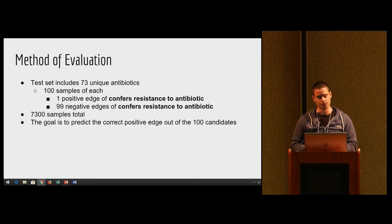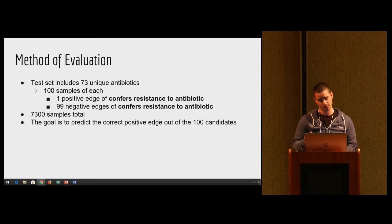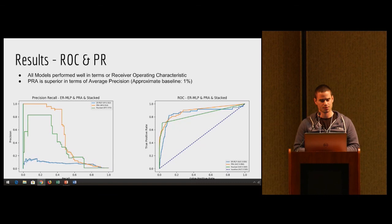The method of evaluation: how do we actually evaluate this model to make sure it's doing what we want it to do? We created a test set that included 73 unique antibiotics. Each antibiotic had 100 samples. We had one positive edge of confers resistance to the antibiotic for that specific antibiotic, and then we had 99 known negatives that we sampled from our known negative list. This produced 7,300 samples in total. The goal was to predict that correct positive edge out of the total 100 candidates for each antibiotic.